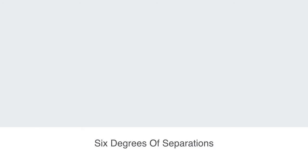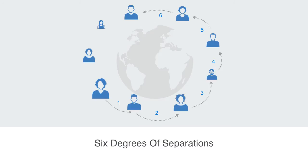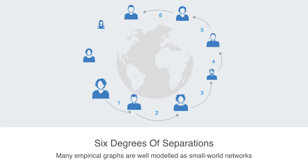The small world phenomena has gone on to be popularized in the six degrees of separation hypothesis, which is a theory that everyone is just six or fewer steps away from any other person in the world, so that a chain of 'friend of a friend' connections can be made between any two people in a maximum of six steps. Many empirical graphs are well modeled by small world networks — social networks, website links on the internet, wikis such as Wikipedia, and general networks all exhibit this small world characteristic.